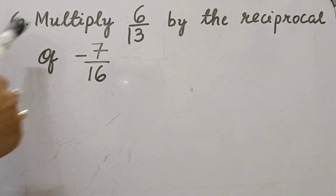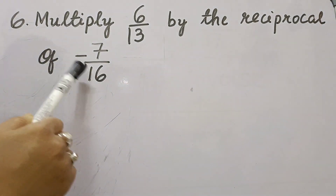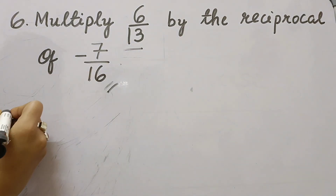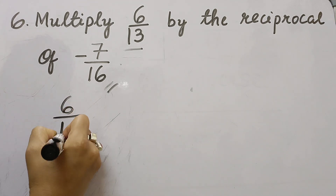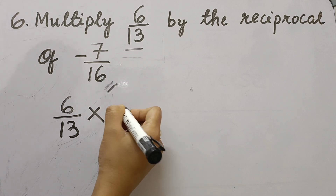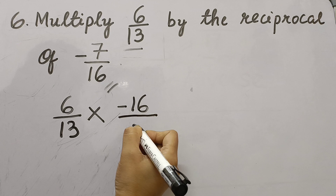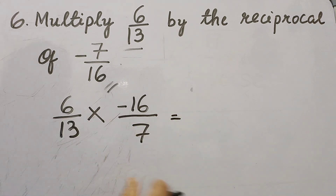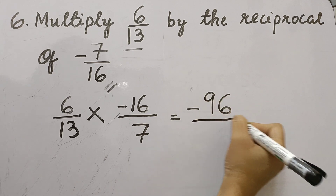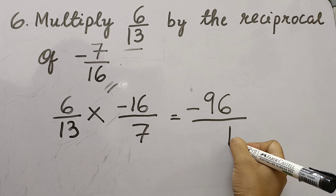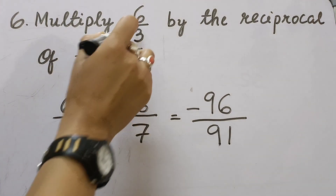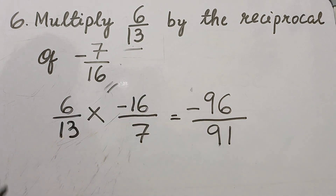Question 6: Multiply 6/13 by the reciprocal of (-7/16). We write 6/13 multiplied by the reciprocal of (-7/16), which is (-16/7). Multiplying: 6 × 16 = 96 in the numerator, and 13 × 7 = 91 in the denominator. So the answer is -96/91.